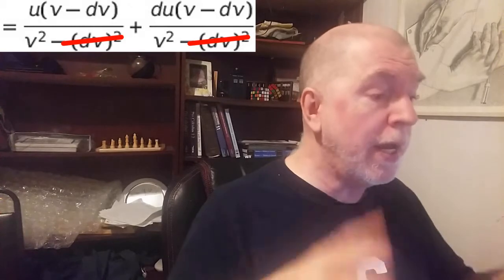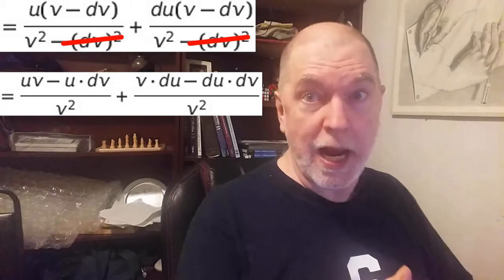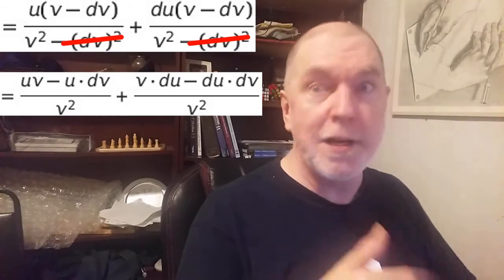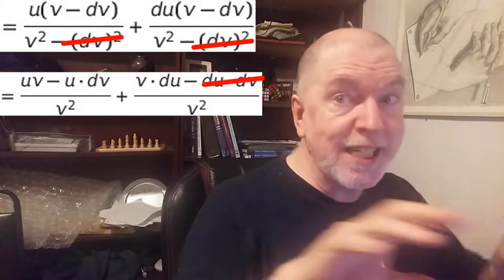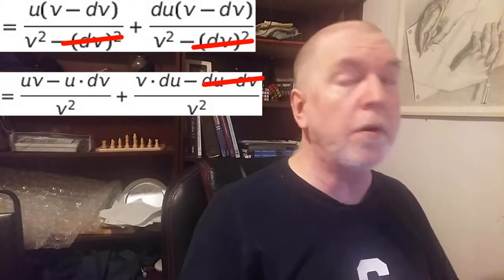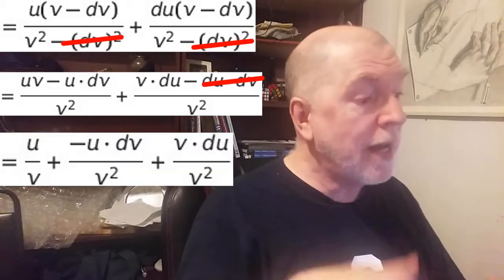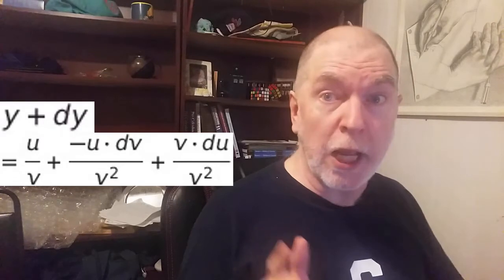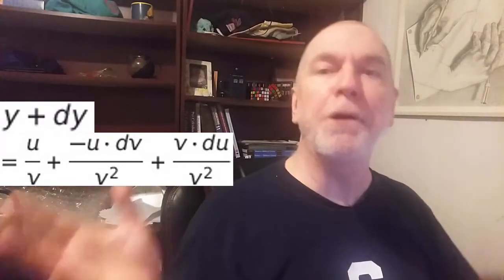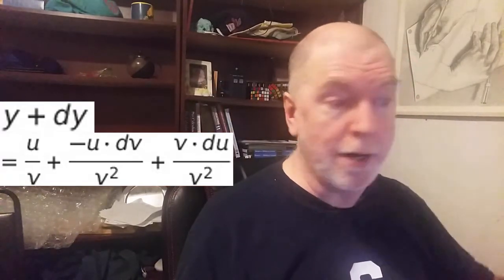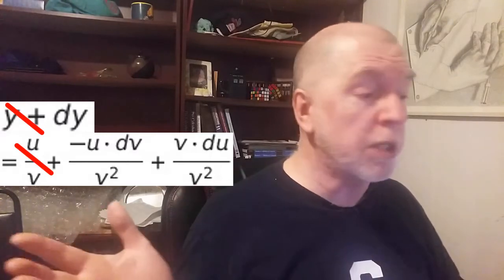Multiply through, and we end up with this expression. And what do we have way over there on the right? dv times du, itsy bitsy teensy weensy. Out it goes. Now we have these three terms all over v squared. Let's separate the u over v squared. Cancel out the v's. And remember, all of this equals y plus dy. Now we're going to remove the original expression: y on the left, u over v on the right, and we end up with an expression for dy.